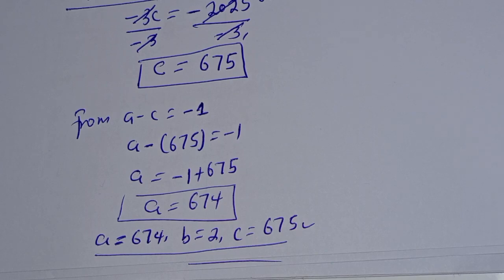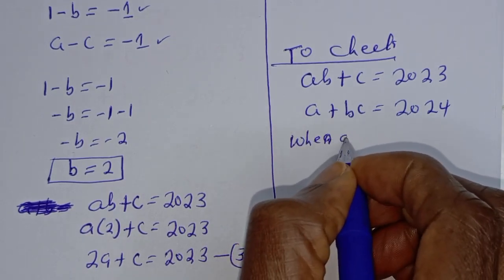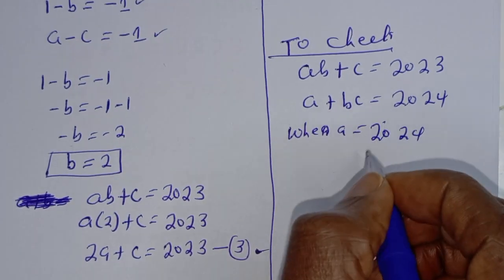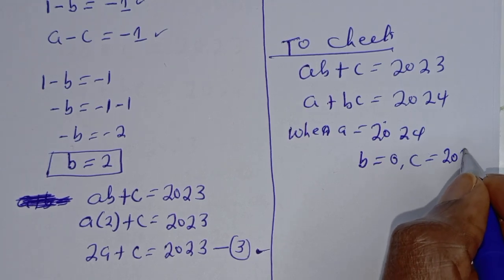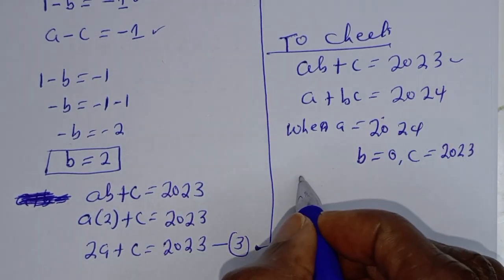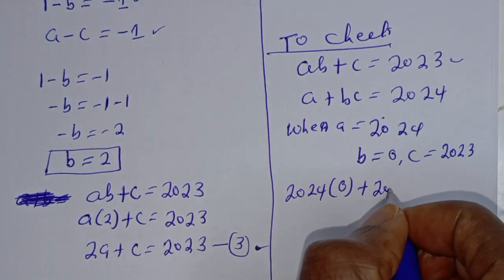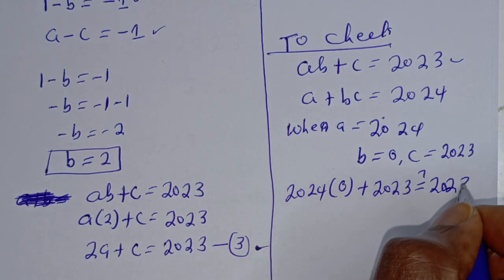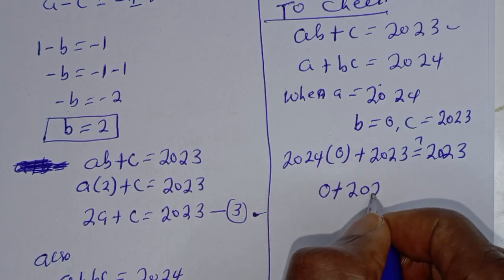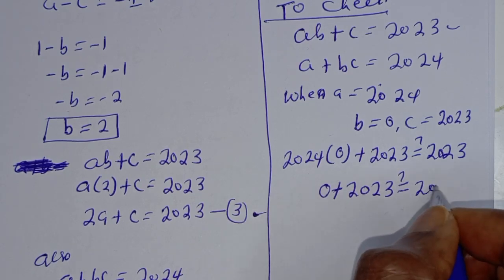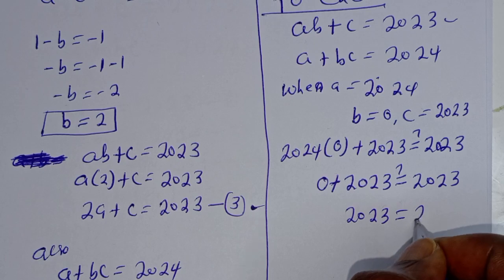Let's check to confirm our answers. For the first case: a = 2024, b = 0, c = 2023. From equation one: 2024(0) + 2023 = 0 + 2023 = 2023. The left-hand side equals the right-hand side. ✓